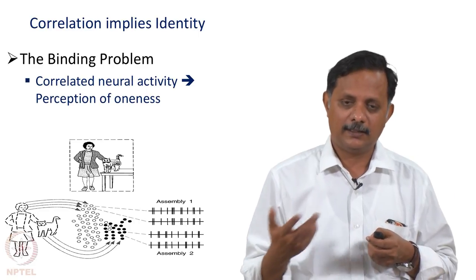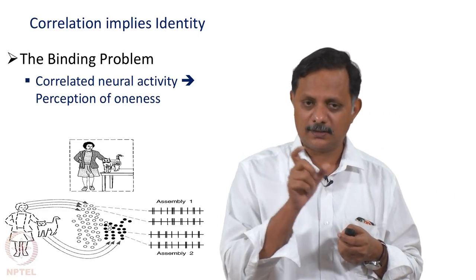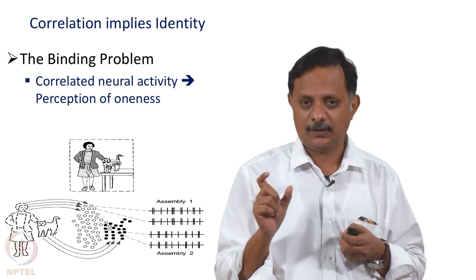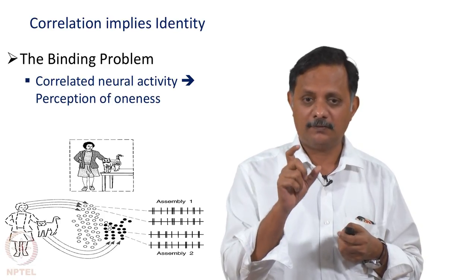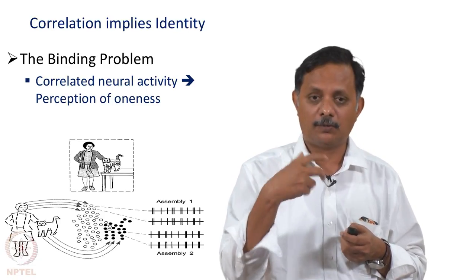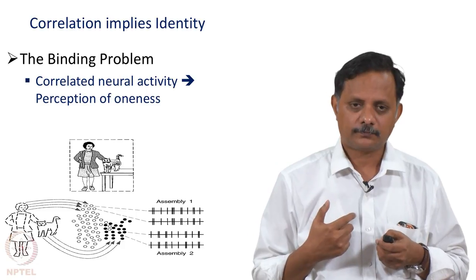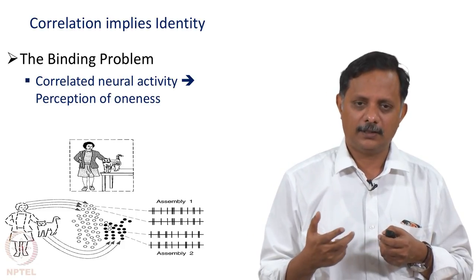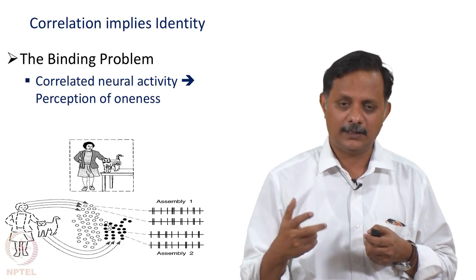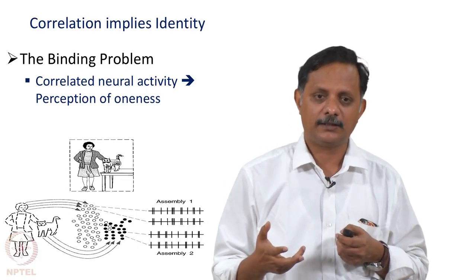By tampering with the correlations among neural activities, you can tamper with the way we perceive and interpret objects in the world. But is there any experimental evidence for this feature binding theory?